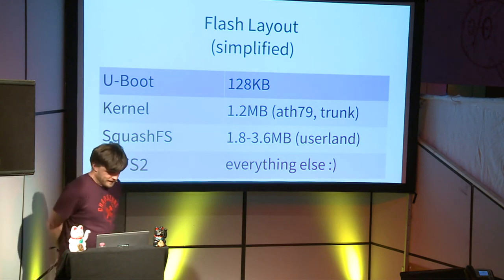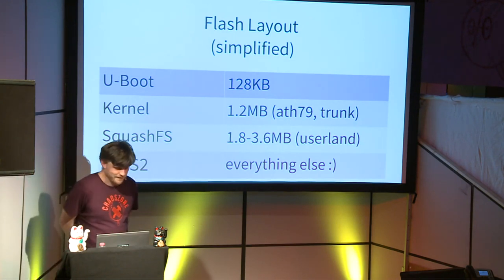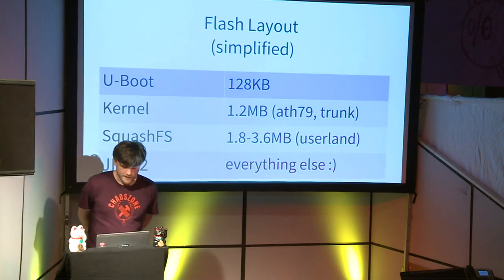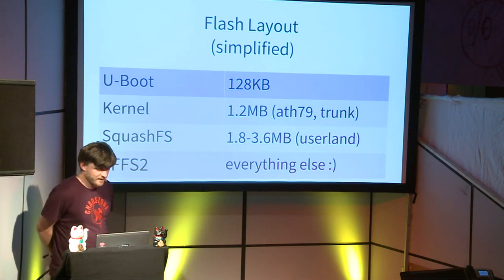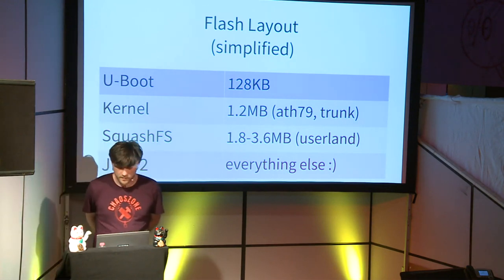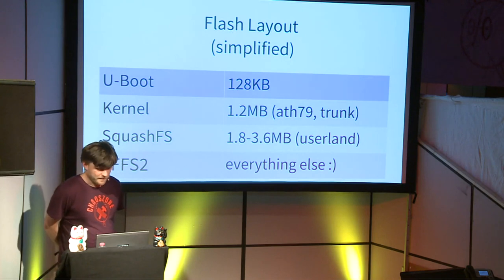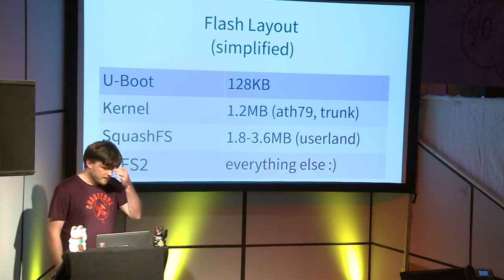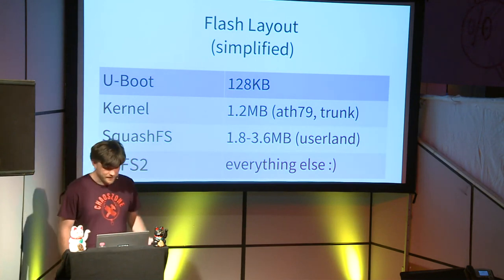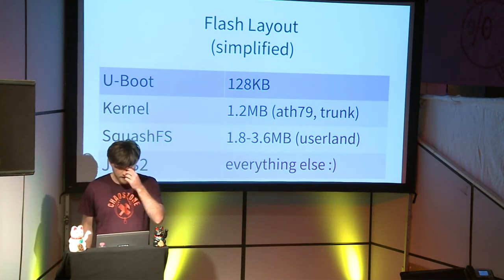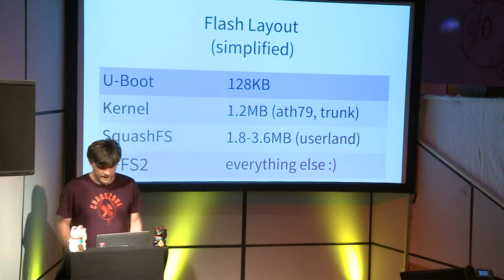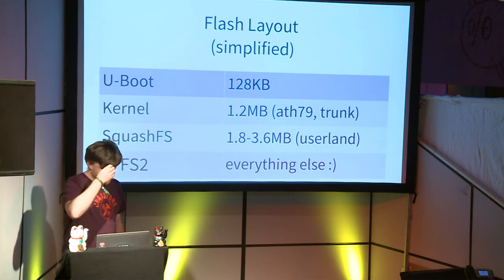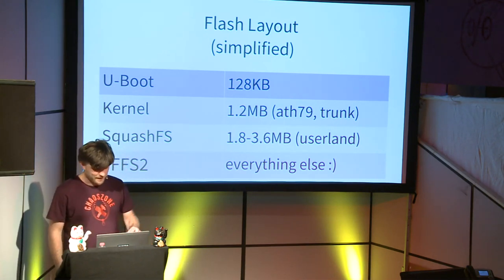So what's the problem? We have 4 megabytes, and on a typical device that's about 1.2 megabytes for the kernel. The compressed SquashFS with the userland and some kernel modules occupies the rest of the device. If there is free space, OpenWRT creates a JFFS2 — a compressed flash filesystem — where the UCI configuration is stored.